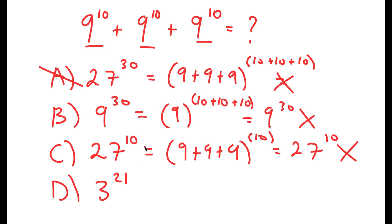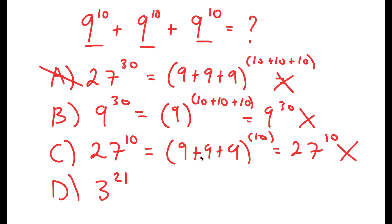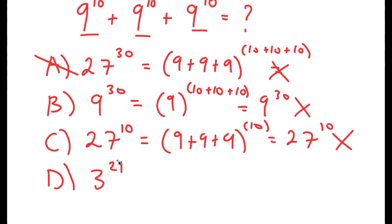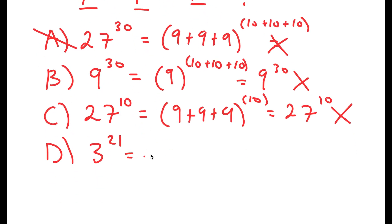Now, finally, 3 to the power of 21, which by the process of elimination is the right answer. However, I'm going to actually show you how you got 3 to the power of 21. So we have 9 to the power of 10 plus 9 to the power of 10 plus 9 to the power of 10.